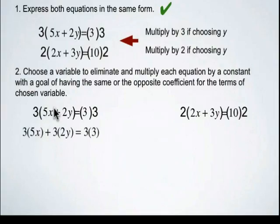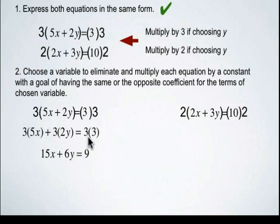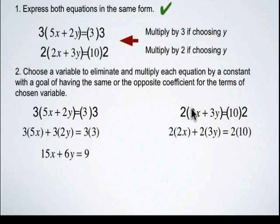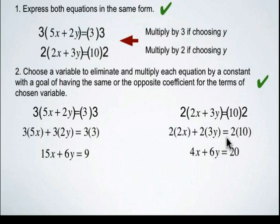So three times 5x plus 2y gives 15x plus 6y, equal to 9, because 3 times 3 is 9. For the second equation multiplied by 2: 2 times 2x is 4x, 2 times 3y is 6y, equal to 2 times 10, which is 20.